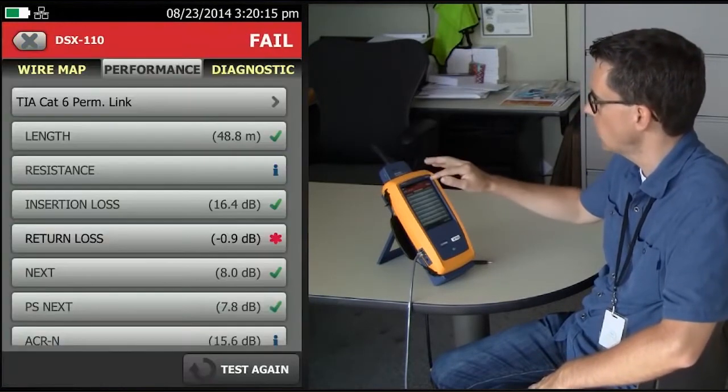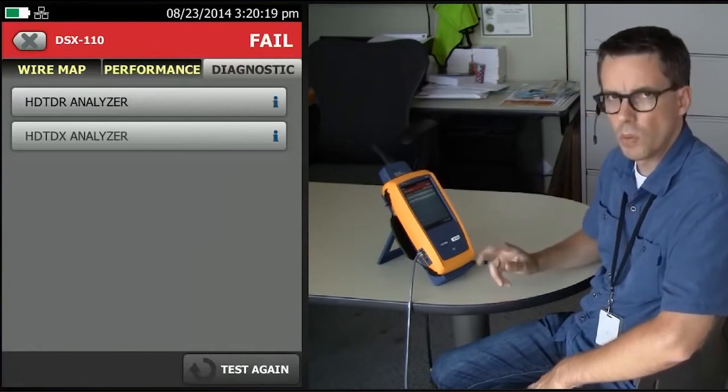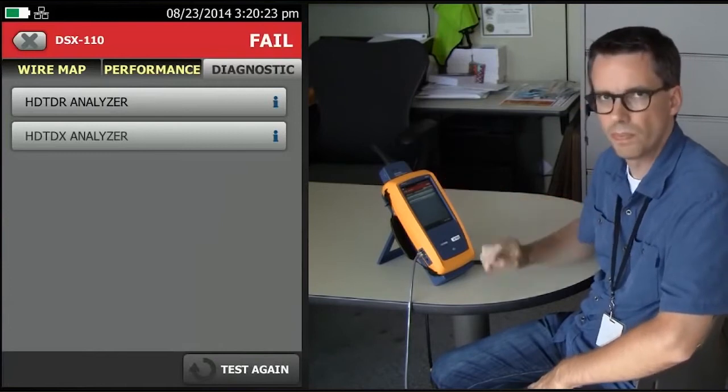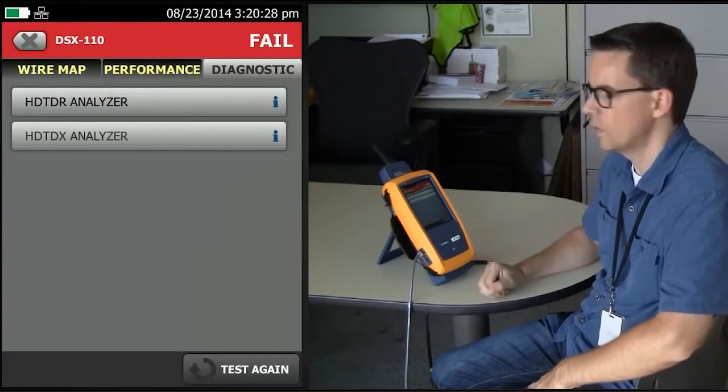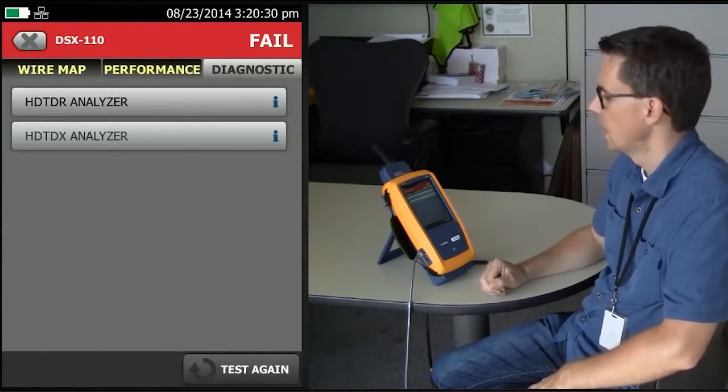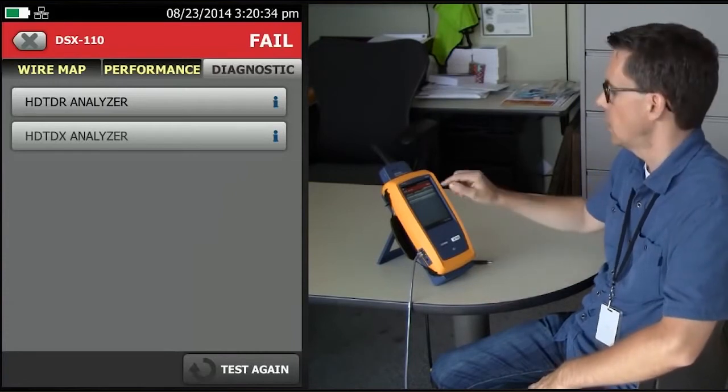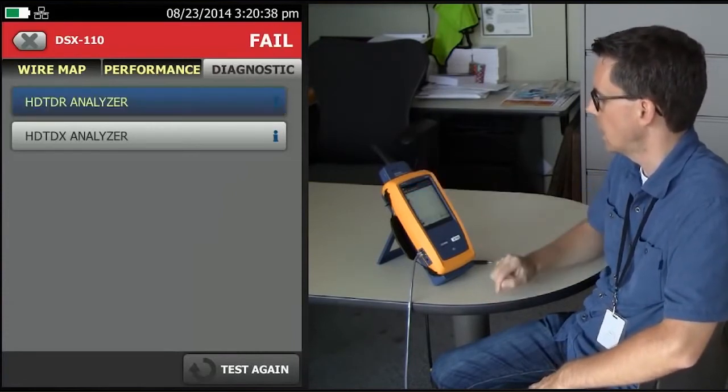So let's go back to the home screen and go to our diagnostic. Now we've got two options in here. We have our high-definition time domain reflectometer that allows us to look down the cable and see where the impedance anomalies are, ideal for troubleshooting return loss. And then we have our HDTDX, X being crosstalk. Since we want to diagnose return loss, we'll go to HDTDR analyzer.